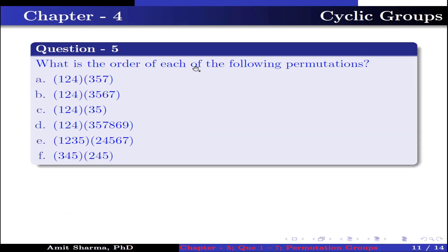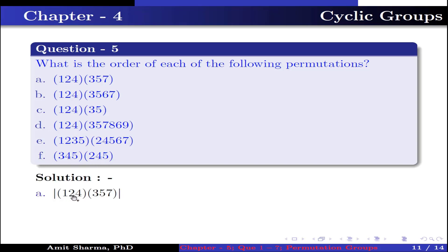Question 5: what is the order of each of the following permutations? Part A: order of (1 2 4)(3 5 7) equals LCM of the order of (1 2 4) and the order of (3 5 7). Both are disjoint, and both are 3-cycle permutations, so LCM(3, 3) = 3. Therefore the order is 3.